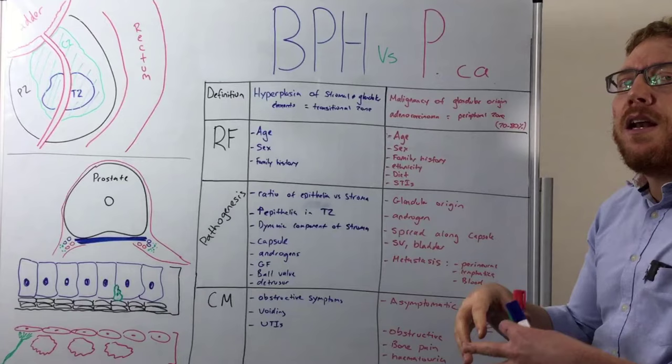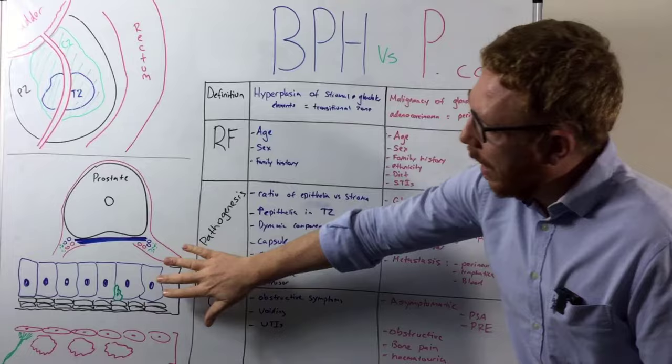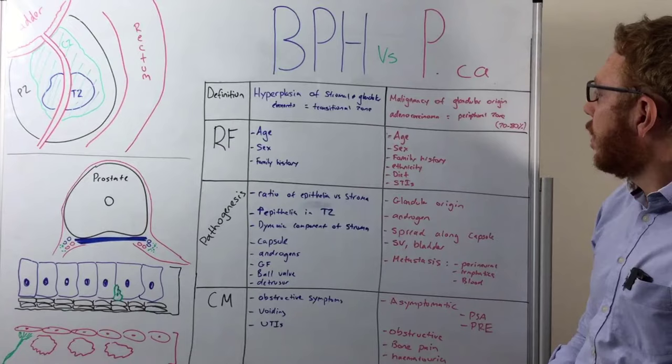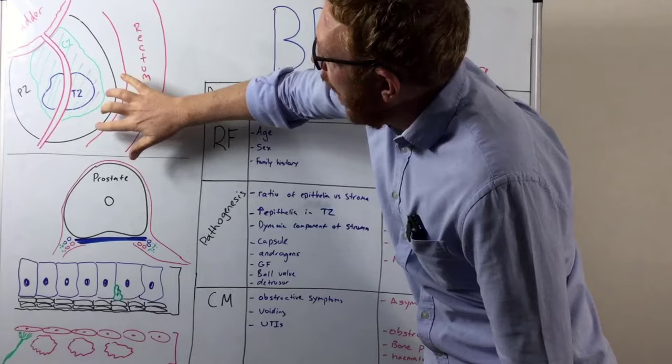Compare that to prostate cancer, which is a malignancy or neoplasm — meaning a disordered new growth, not simply increased growth. It originates from the glandular part, specifically the tubular or epithelial cells, making it what we call adenocarcinoma — a cancer originating from the glandular component. About 70–80% of all prostate cancers are found in the outer part, the peripheral zone, more likely at the back.